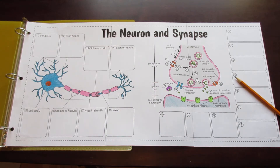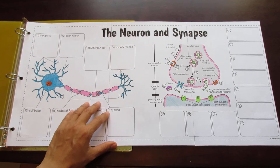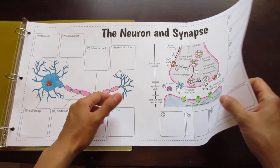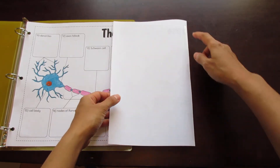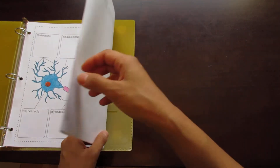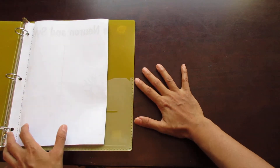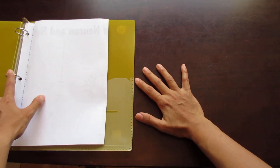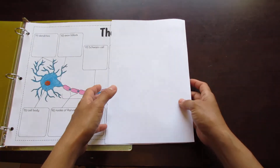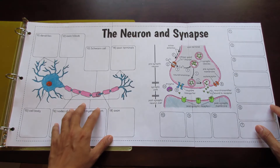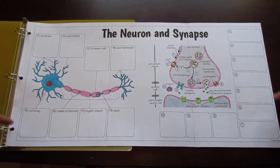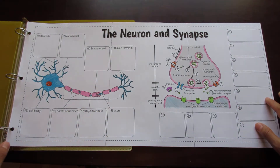This is the Tang Star Signs Big Neuron and Synapse Foldable. It's made up of three pieces of paper that, when cut along the seams and taped, create a foldable that fits neatly into a binder without impeding the binder rings. For an interactive notebook, just cut along the dashed lines to make the foldable smaller.